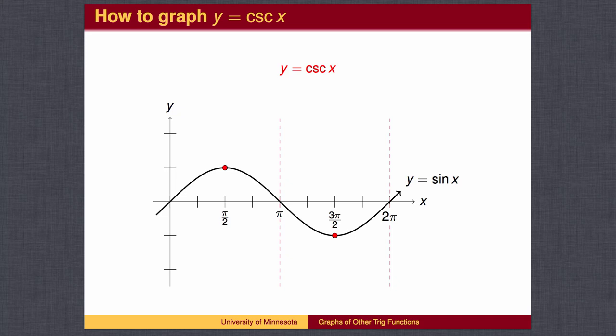At pi over 6, the sine is 1 half, so the cosecant is 2. The same is true at 5 pi over 6.